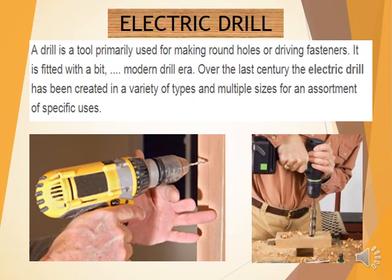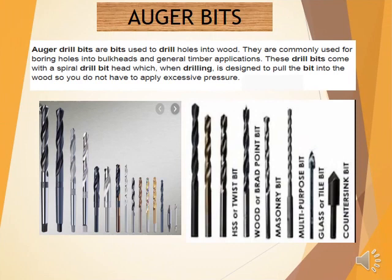The electric drill is a tool primarily used for making round holes or driving fasteners; it is fitted with a bit. Over the last century, the electric drill has been created in a variety of types and multiple sizes for an assortment of specific uses. Auger bits are drill bits used to drill holes into wood; they are commonly used for boring holes into bulkheads and general timber applications. These drill bits come with a spiral head designed to pull the bit into the wood so you do not have to apply excessive pressure.